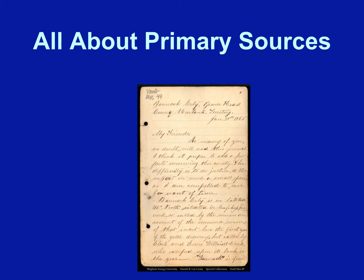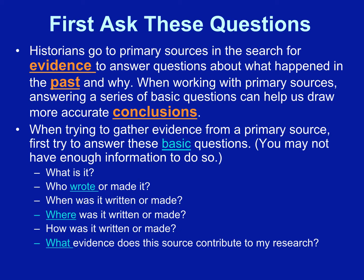So let's get started. Historians go to primary sources in the search for evidence to answer questions about what happened in the past and why. When working with primary sources, answering a series of basic questions can help us draw more accurate conclusions. When trying to gather evidence from a primary source, first try to answer these basic questions — you may not have enough information to do so, but still try: Who wrote or made it? When was it written or made? Where was it written or made?